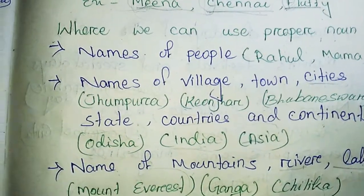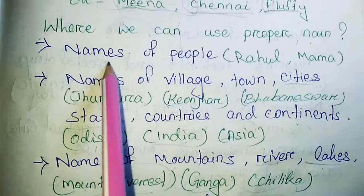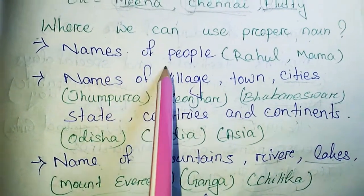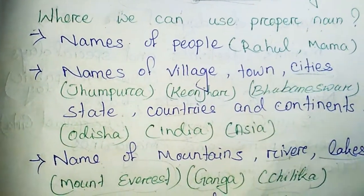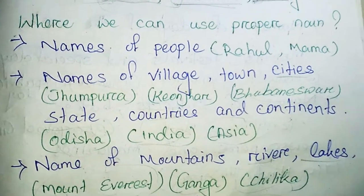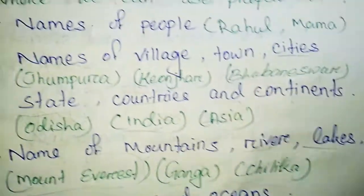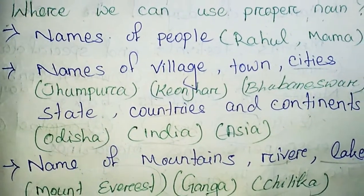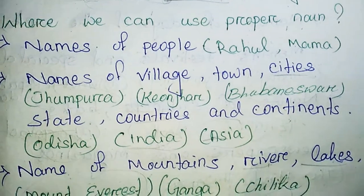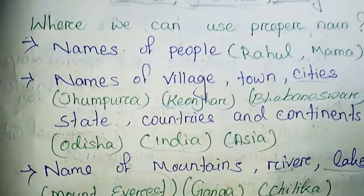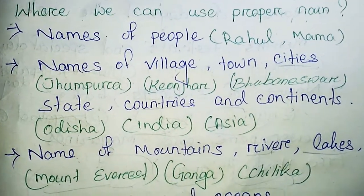So where we can use proper nouns — names of people, such as Rahul, Mama, any name you can use: your name, your father's name, your mother's name, your brother's name, sister's name, teacher's name, friend's name — any name you can use here. So those names are called proper noun.